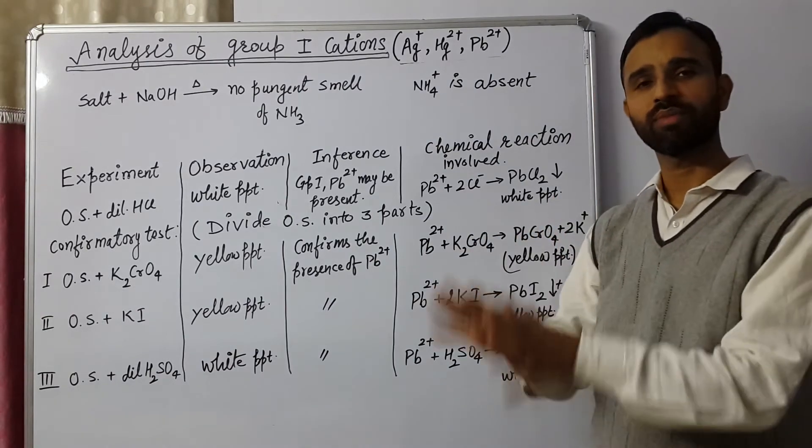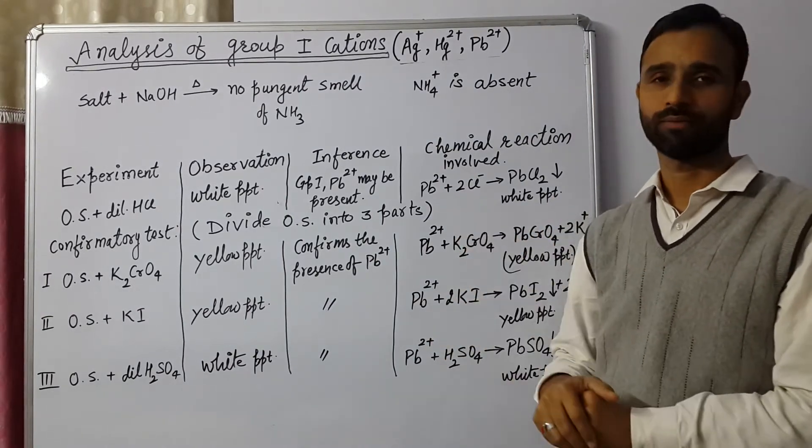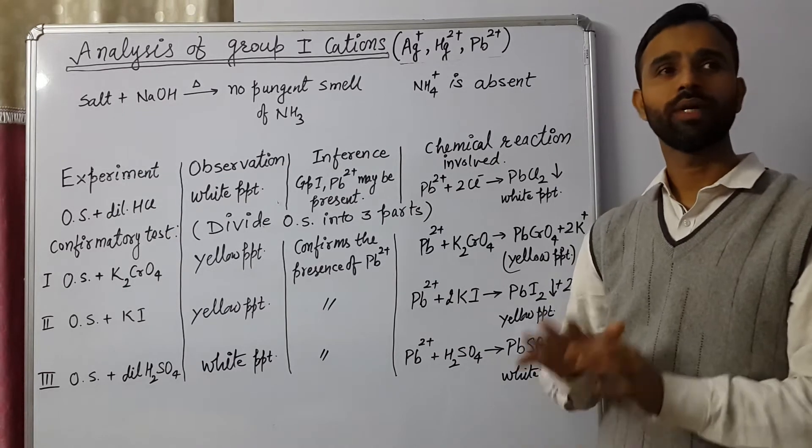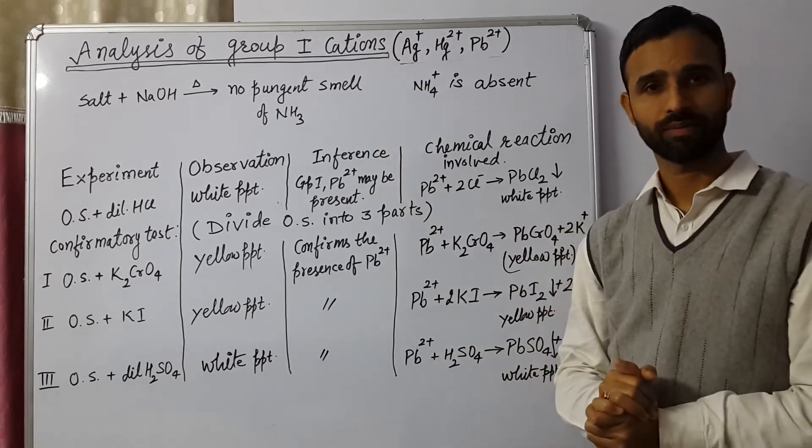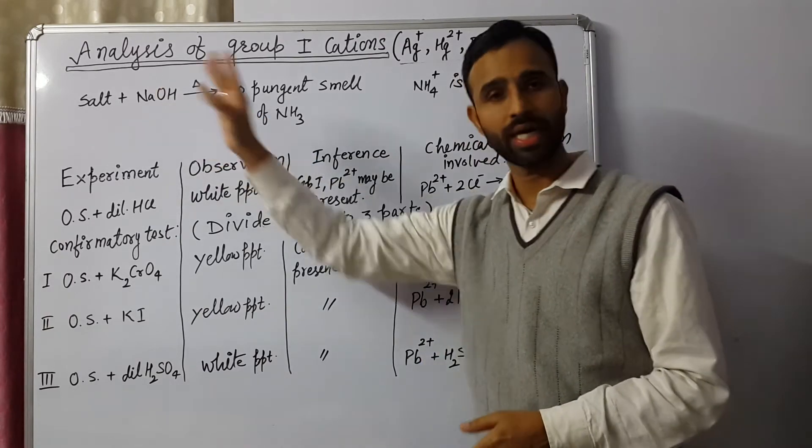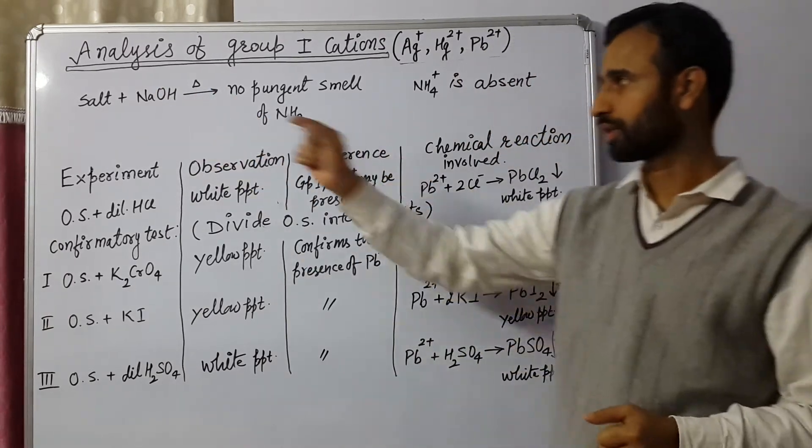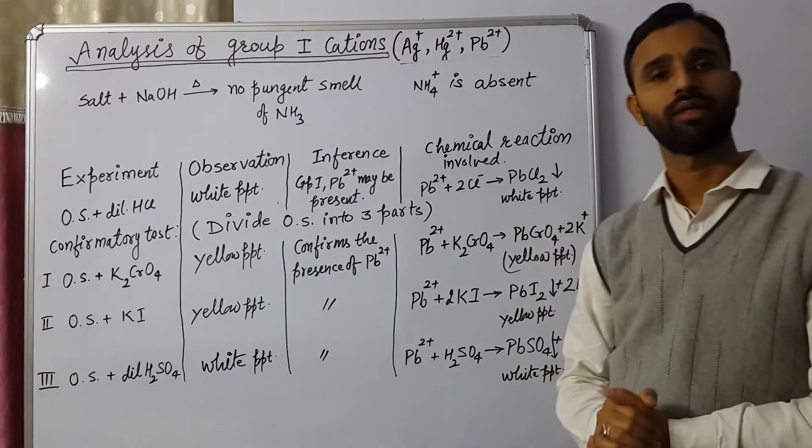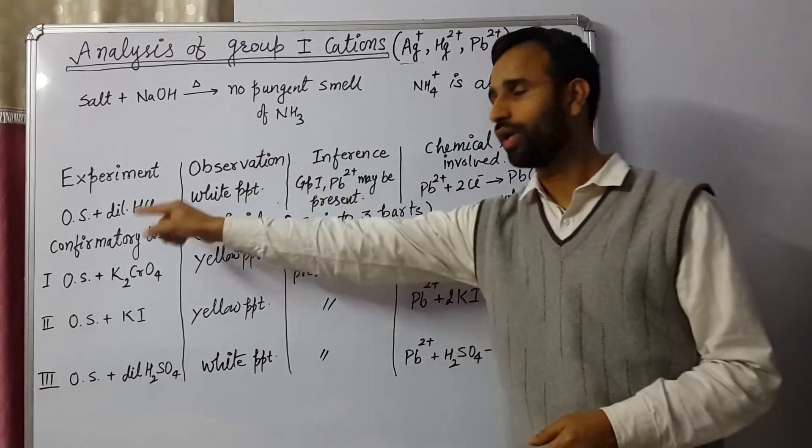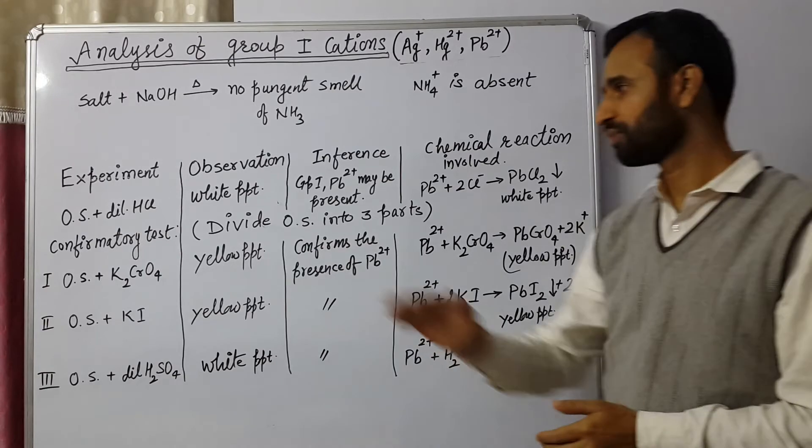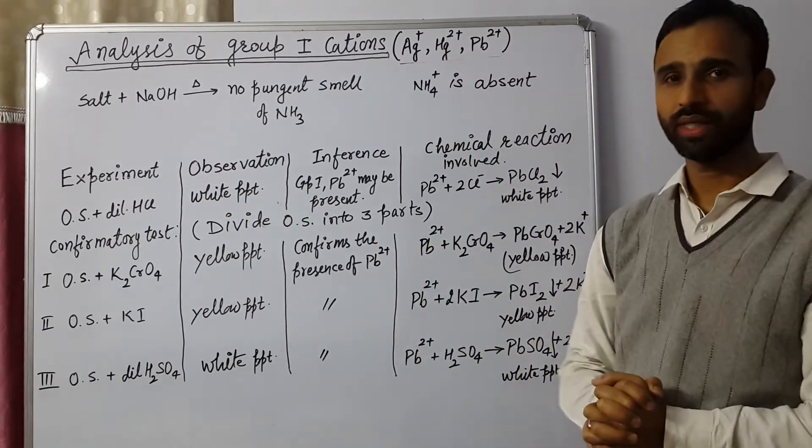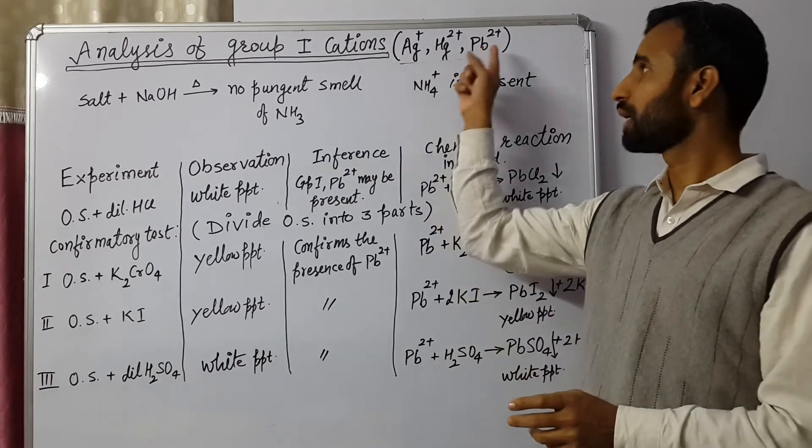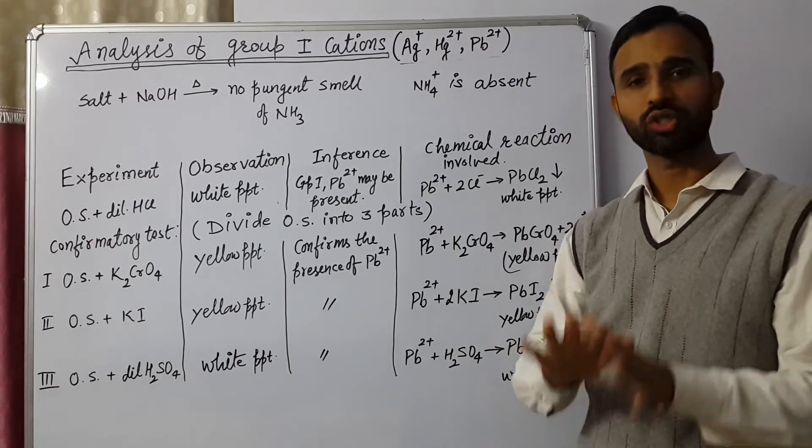Then group agent for group 1 is dilute HCl. Like for group 0, it is NaOH. For group 1, it is HCl. In OS, we add dilute HCl. When we add dilute HCl, if white PPT appears, that means any one of them is present. But in schools,